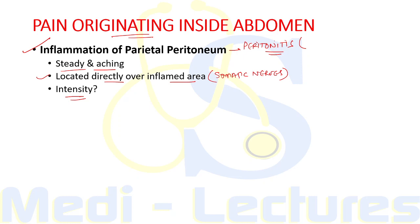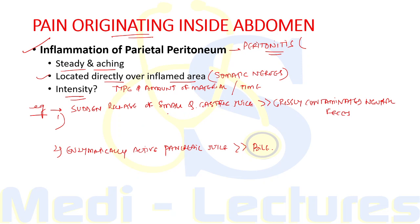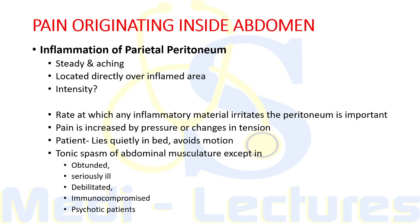For example, the sudden release of even a small quantity of gastric juice into the peritoneal cavity causes much more pain than grossly contaminated neutral feces. Enzymatically active pancreatic juice is very irritant compared to bile, which has no potent enzymes. The rate at which inflammatory material irritates the peritoneum is an important consideration when evaluating the intensity of abdominal pain.